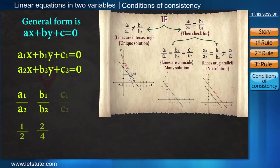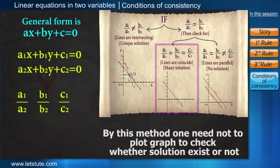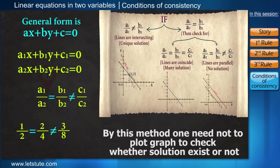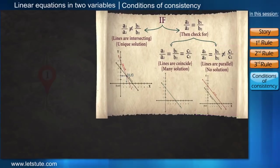And if these two ratios are equal, then we'll check for the third ratio, that is the ratio of c1 by c2. If all three ratios are equal, then the lines are overlapping, that means coincide and it will have many solutions. And if the first two ratios are not equal to the third ratio, then the lines are parallel and it will have no solution.